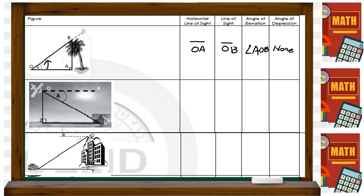Next, we have the figure with an airplane and a house. The horizontal line here is OX. The line of sight going down is OY. Since it's going down, it's an angle of depression — there's no angle of elevation. The angle of depression is angle XOY.